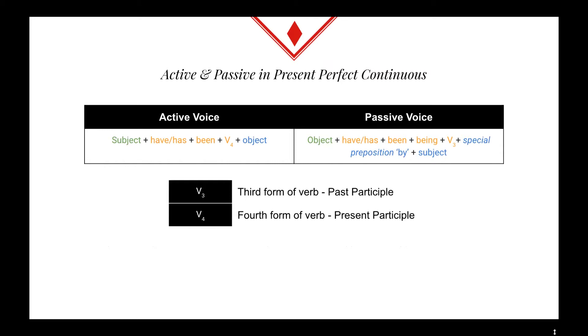In active voice, first is the subject, followed by have or has, then been, followed by the fourth form of the verb, and then the object.